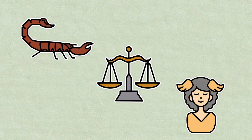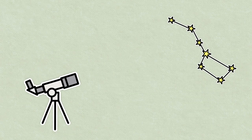They name these patterns after animals, objects, or mythological characters that they could see in the shapes. There are 88 constellations recognized by astronomers today.